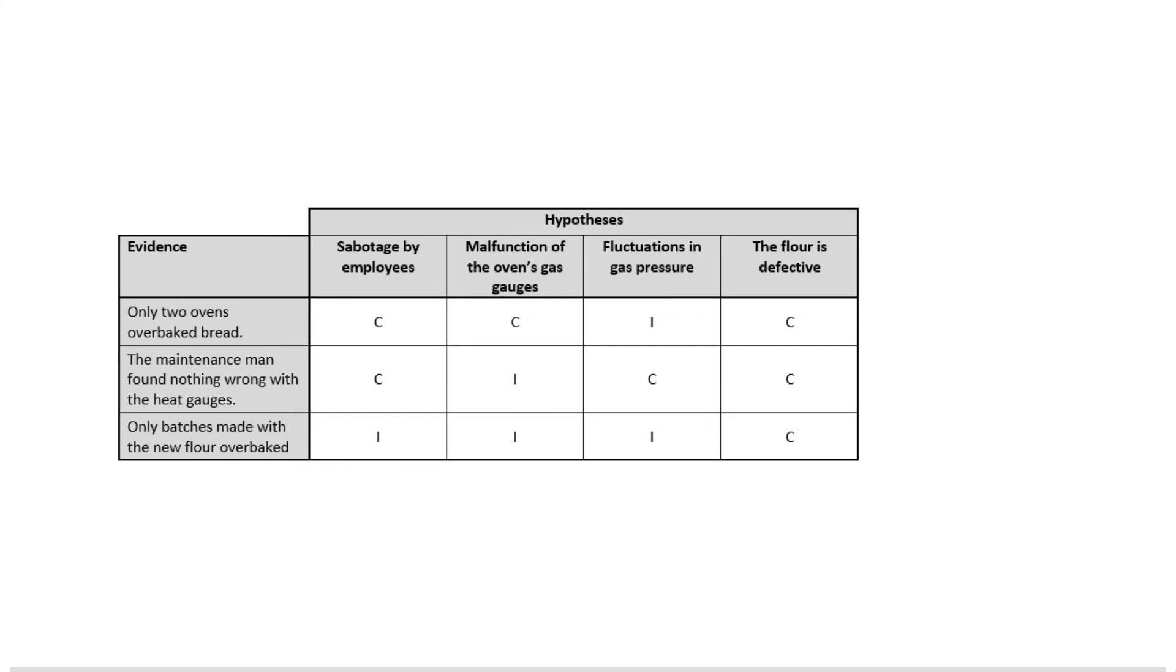So really in spite of all that evidence that we managed to assemble, there's only three pieces that really help us to differentiate which of these hypotheses is stronger than the others. And Jones concludes that it was likely the flour that was the cause of this over baking of bread, and it was less likely to be the case that it was the employees sabotaging it, and it seems very unlikely that it was either the gas gauges or the gas line that was causing this.